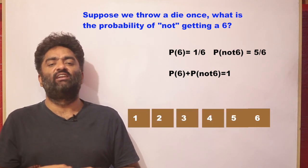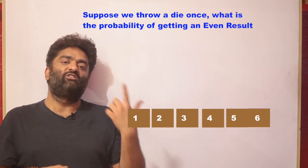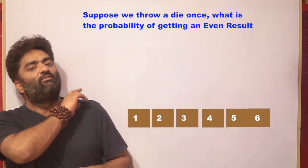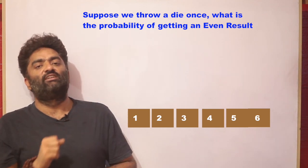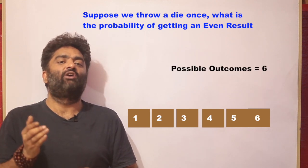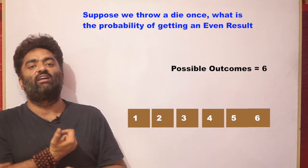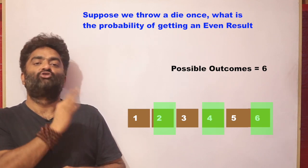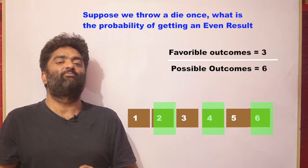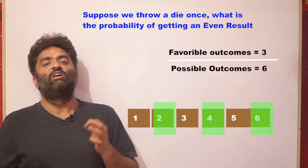This example can be extended further. What is the probability that the number rolled is even? The probability formula is favorable outcomes over all possible outcomes. With a single die there are 6 possible outcomes. The even numbers are 2, 4, and 6 — so 3 events are favorable. The answer is 3 by 6, which equals 1 by 2, or 0.5, or 50%.